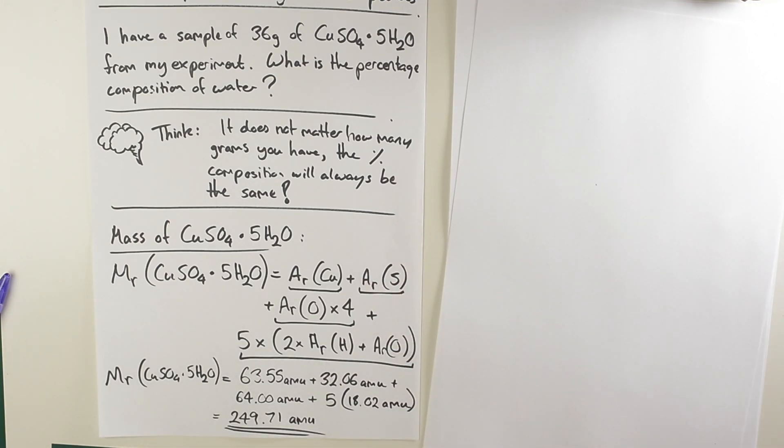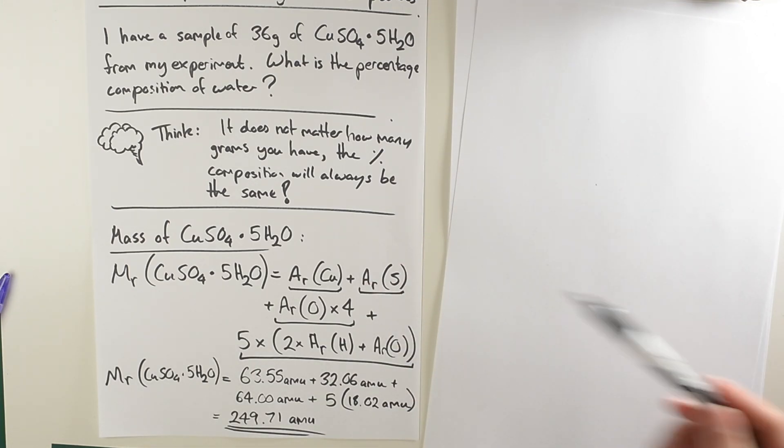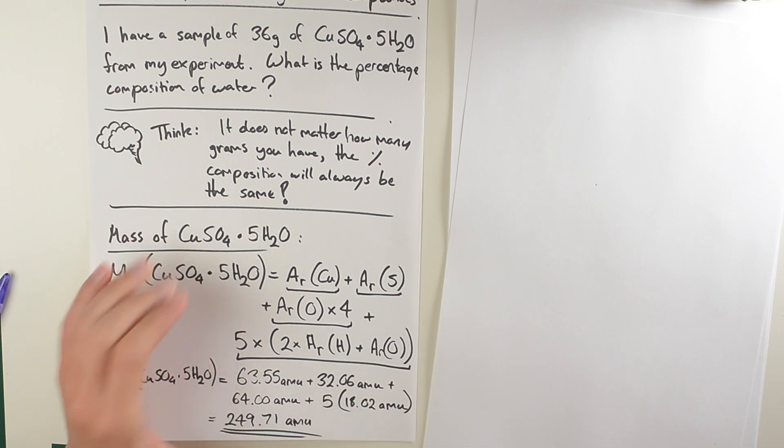Now we need to calculate the molecular mass of the five groups of water molecules.